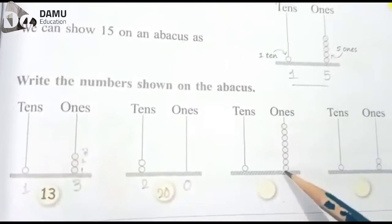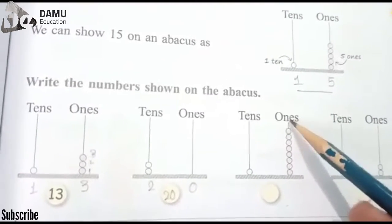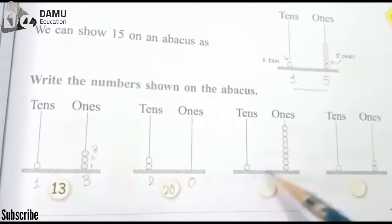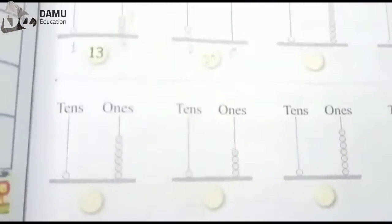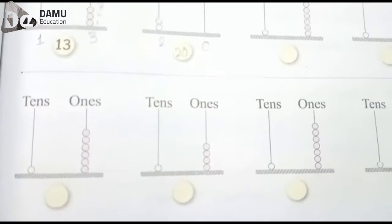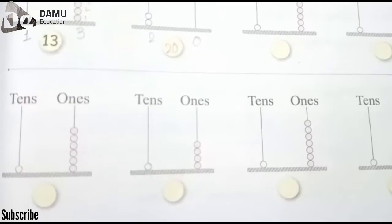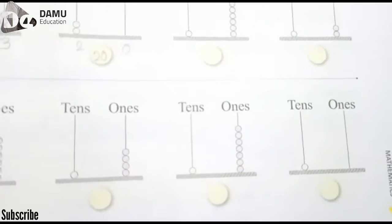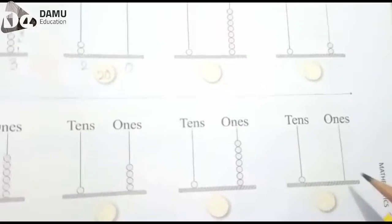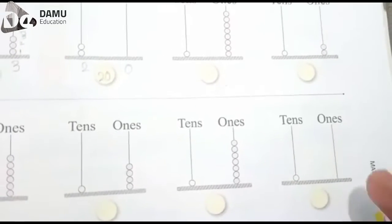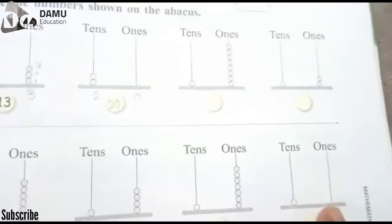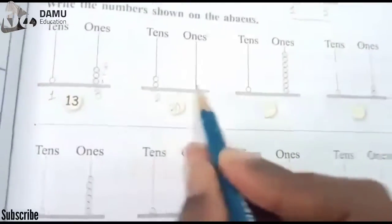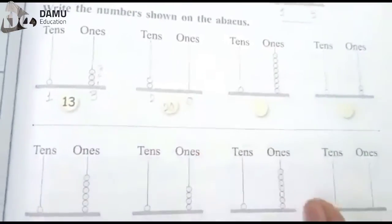This is page number 65 — don't forget that. For each abacus shown, count how many beads are in the ones place and how many are in the tens place, then combine them. The last one has no value in the ones place, so zero, and one bead in the tens place, so that is 10.